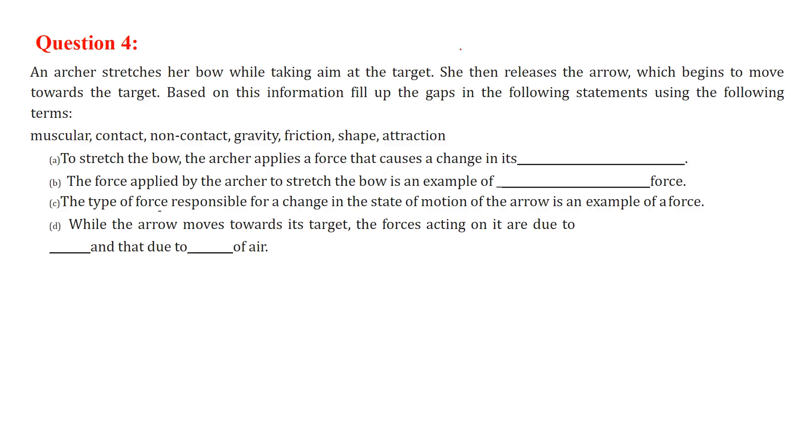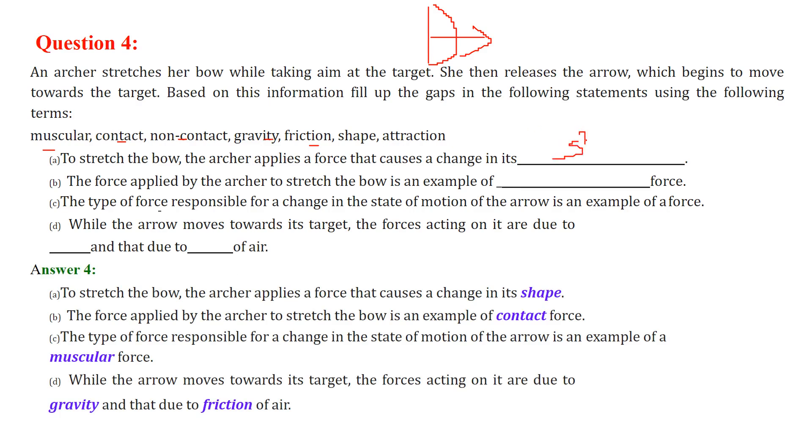An archer stretches her bow, so this is the bow and this is the arrow. Now which begins to move towards the target. Based on the information, fill up the gaps in the following statement using the following terms: muscular, contact, non-contact, gravity, friction, shape, attraction. First is, to stretch the bow the archer applies a force that causes a change in its shape. This shape changes when you pull this string, the bow shape changes.